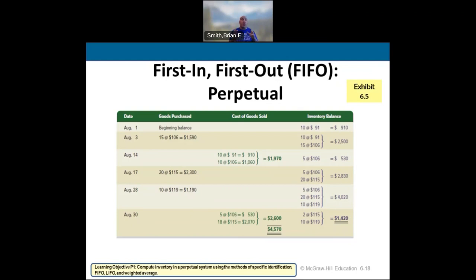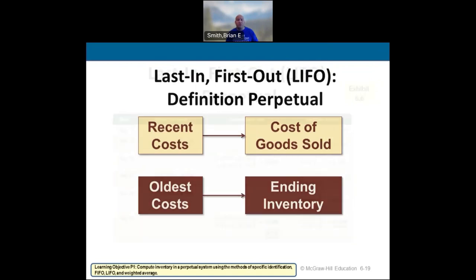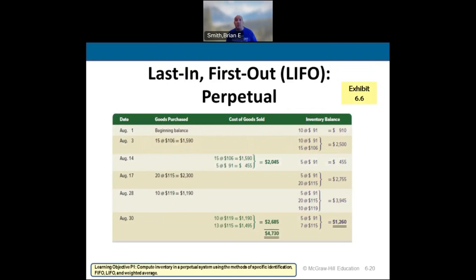On August 30th we sell 23 units under FIFO: we pull 5 from the $106 lot and 18 from the $115 lot, leaving 2 units from the $115 lot and 10 from the $119 lot in our ending inventory. The LIFO method does the exact opposite — it sells the most recently purchased items first. On August 14th under LIFO, we sell from the $106 lot first. After filling that order, we have 5 units left of the $91 lot — and notice we never sell those $91 units because we're always selling the most recent ones first.